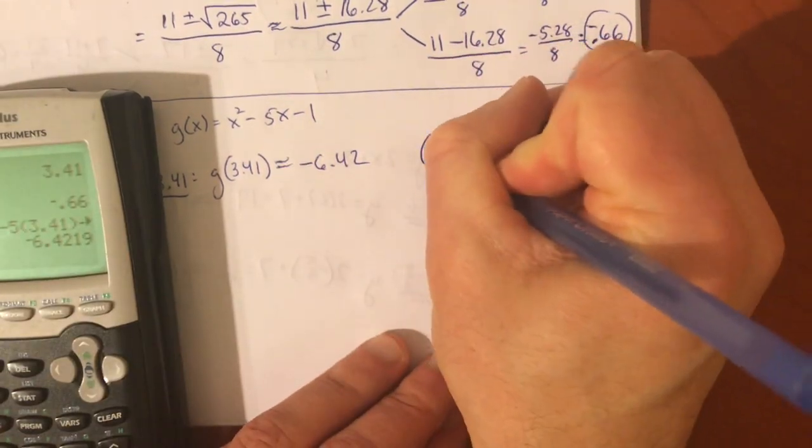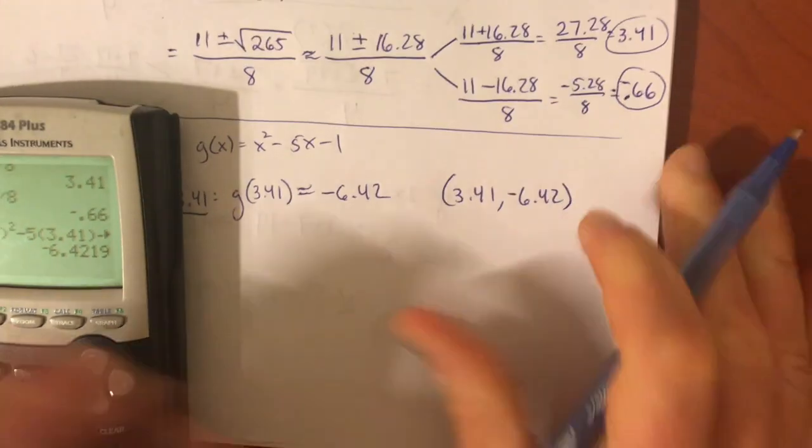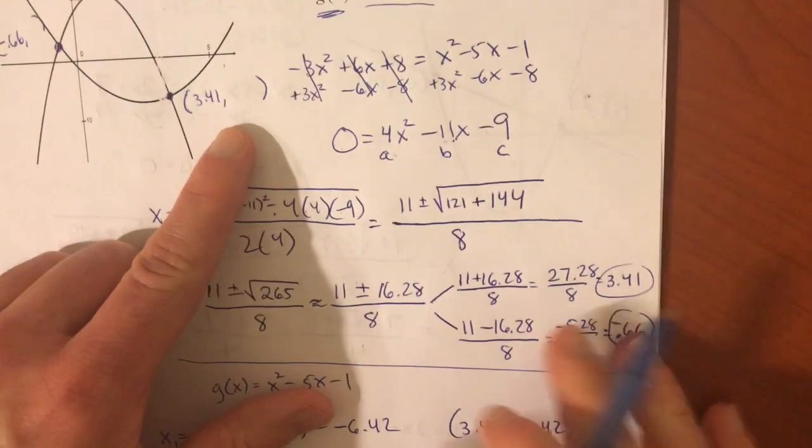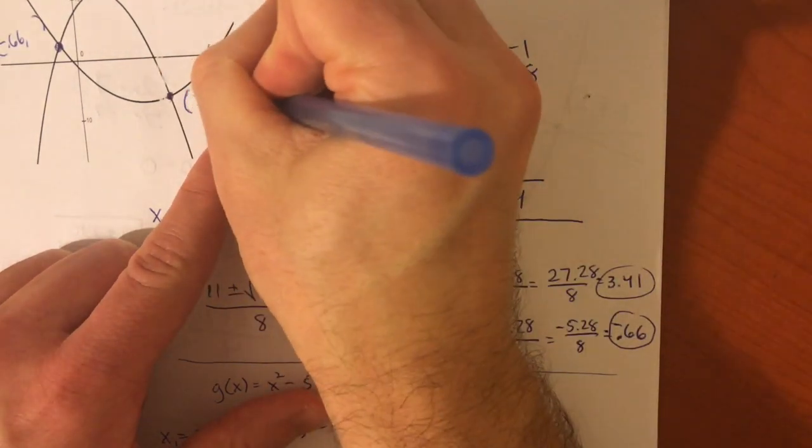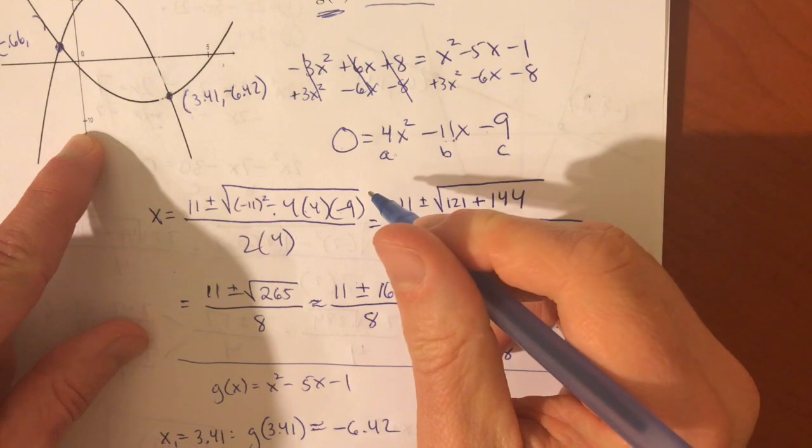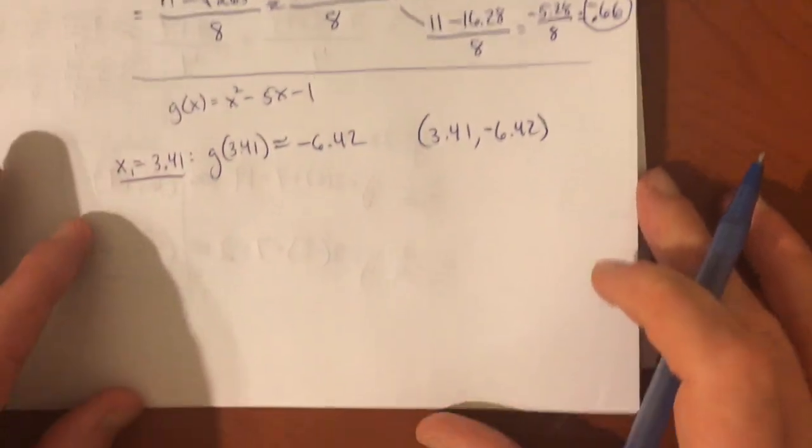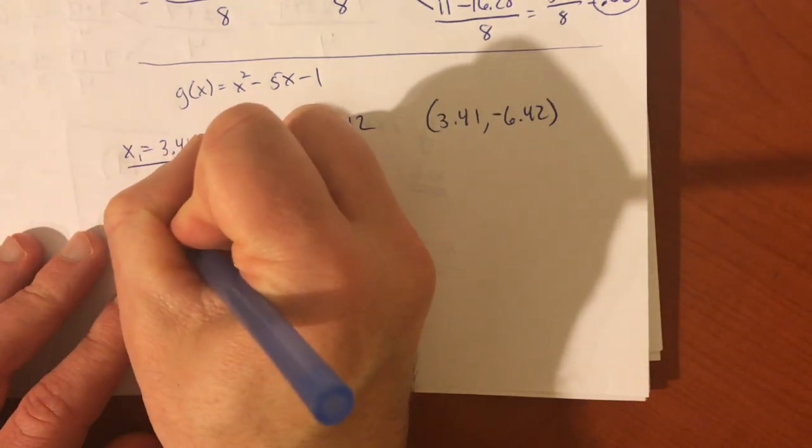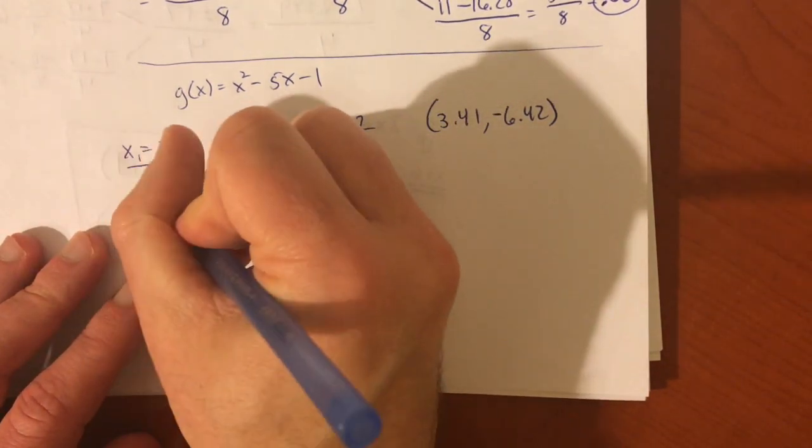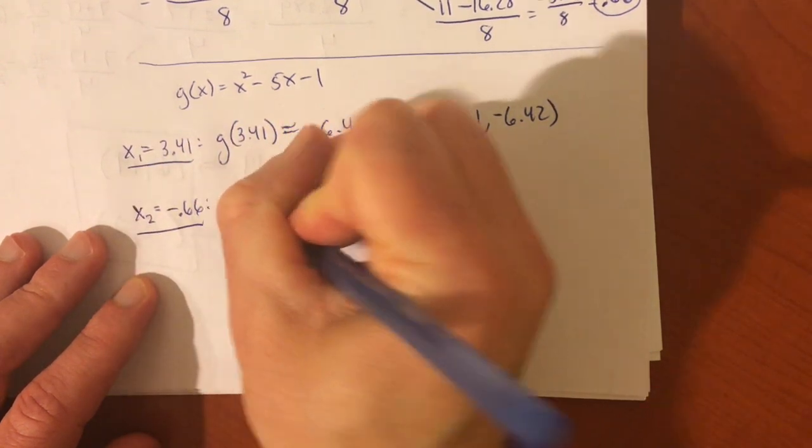And, so, that is one of the points. 3.41, negative 6.42. We said that seems like it should have a negative y value. And, we can check that y scale. That seems about right. If that's negative 10, that seems about negative 6.42. The other x value, or x sub 2, the second x value was negative 0.66. I'm going to plug that into g.